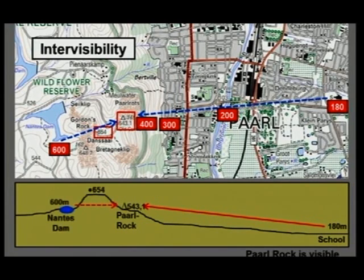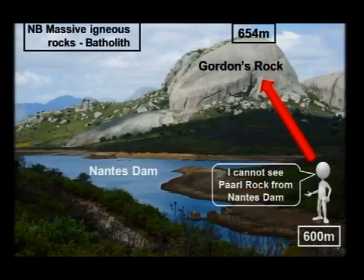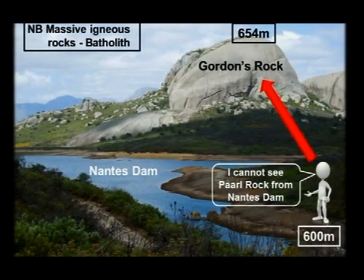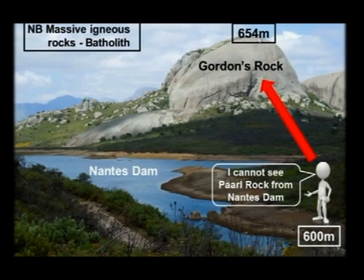When we look at our cross-section, this is what's happening: here we've got Nantes Dam, here we've got Gordon's Rock, and there we've got PAL Rock. In other words, PAL Rock is not visible from the dam. I've also brought a photo for you. Here we've got Nantes Dam — the height is 600 meters, and Gordon's Rock is 654 meters. This person cannot see PAL Rock from Nantes Dam because Gordon's Rock is in the line of vision. PAL Rock is just on the backside, on the other side of Gordon's Rock — you cannot see PAL Rock from Nantes Dam.